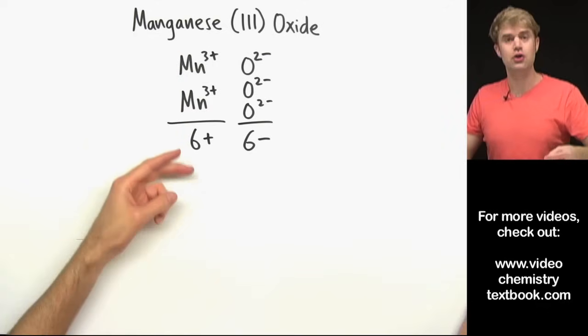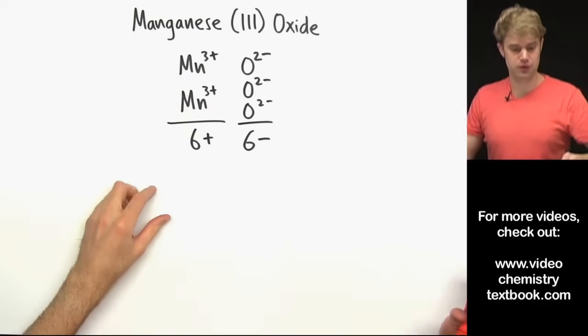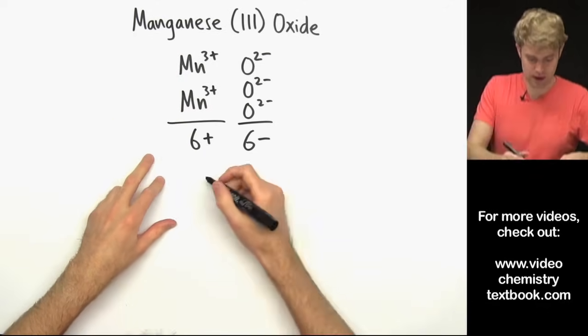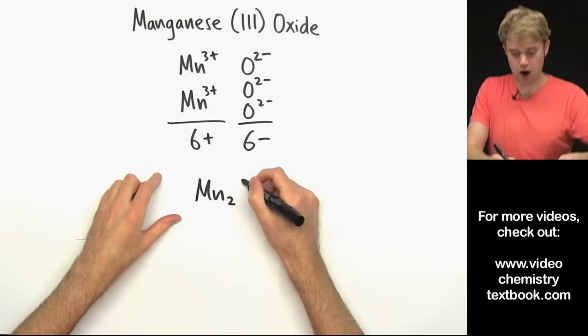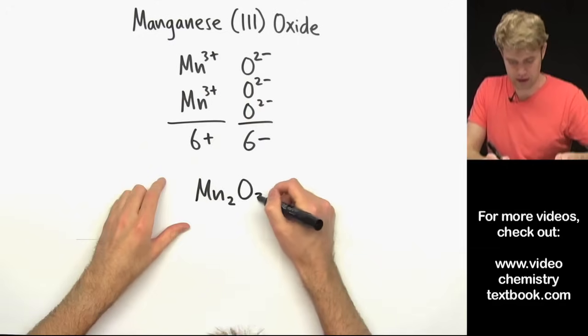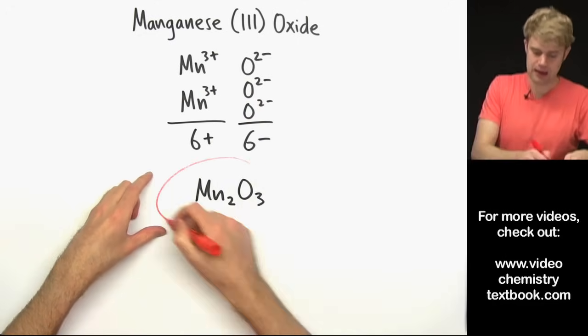Three oxides balance out two manganese 3 pluses. So our formula is Mn, we've got 2 of those, 2, O, 1, 2, 3 of those. And as before, don't be confused by this Roman numeral 3.